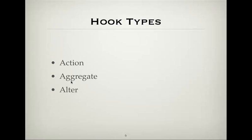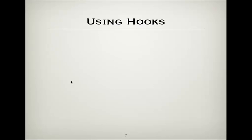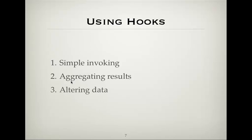Cool. So alter hooks, so passing a single variable through all your modules to make changes to it. And also attributes, so things like the views API. There's a hook to tell what API you're using. Just different information that kind of defines what your module is. So there's four different ways to use hooks and I'll run through a quick example of each one. There's simple invoking, aggregating results, altering data, and passing by reference. That's actually a special case. I'll explain in just a minute.